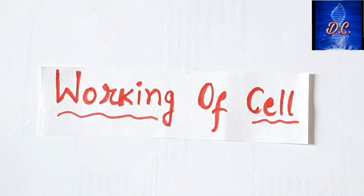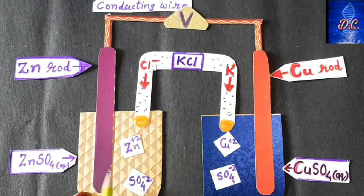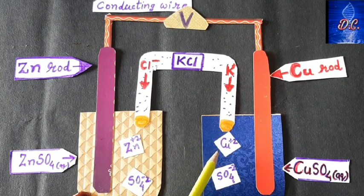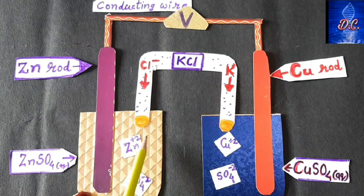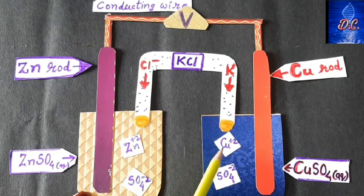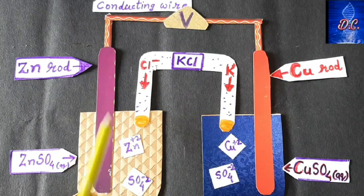Now let's discuss the working of the galvanic cell — how electricity is generated through redox reactions. ZnSO₄ in aqueous solution is present in the form of Zn²⁺ ions and SO₄²⁻ ions. Similarly, copper sulphate is present in the form of Cu²⁺ ions and SO₄²⁻ ions. These electrolytes are present in the dissociated form, as ions.